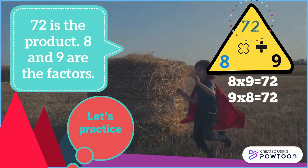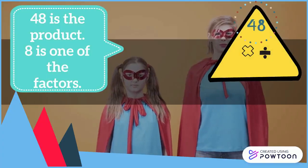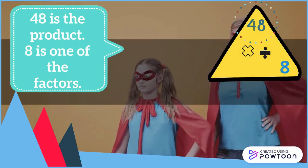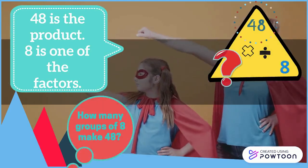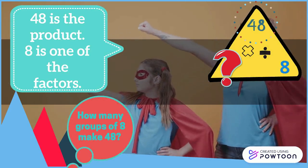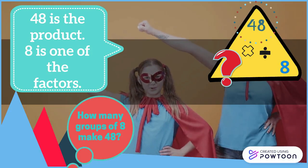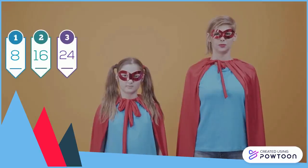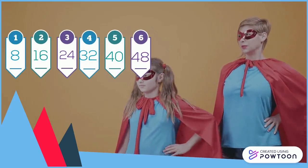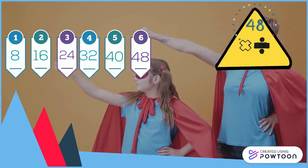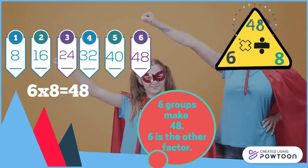Let's practice. 48 is the product. 8 is one of the factors. How many groups of 8 make 48? 8, 16, 24, 32, 40, 48 — 6 groups make 48. 6 is the other factor.